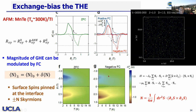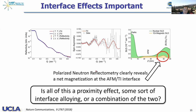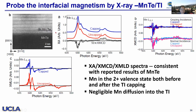We look at the interface effect again by neutron scattering, looking at the scattering cross-section, which gives the scattering length density. This shows magnetic signal propagating into the AFM layer, which could be due to interface intermixing or a combination. It turns out that by capping BST onto the AFM, we see no major difference from the X-ray, XMCD, or XMLD, showing no significant interface mixing effect.